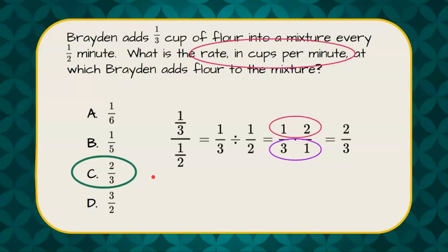So there we have it. Our answer is C, two-thirds of a cup of flour per minute.